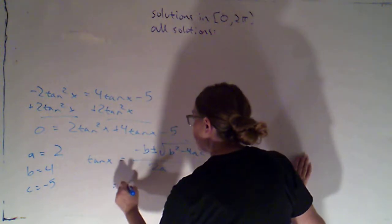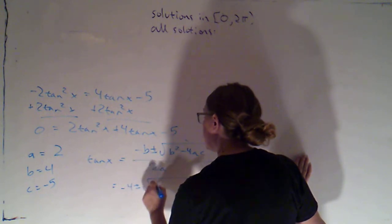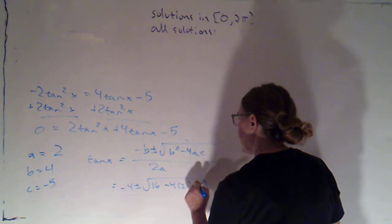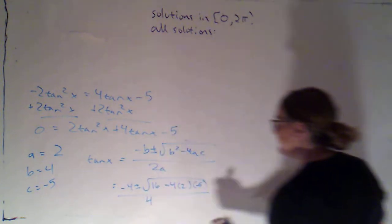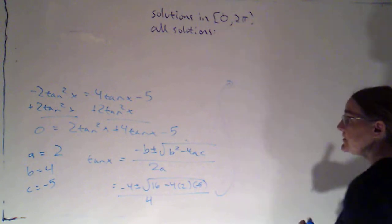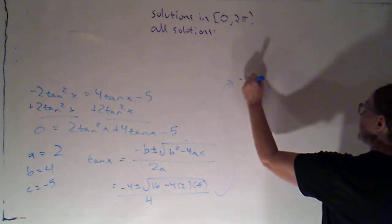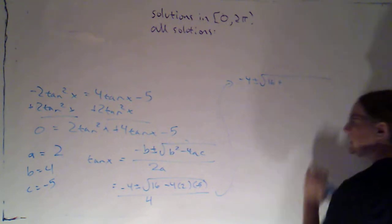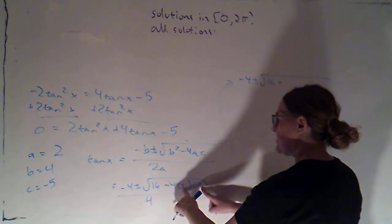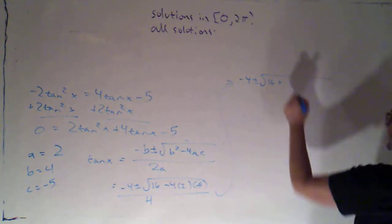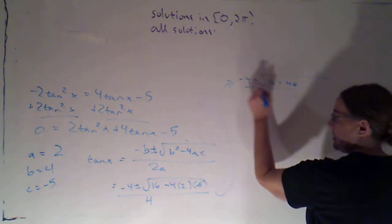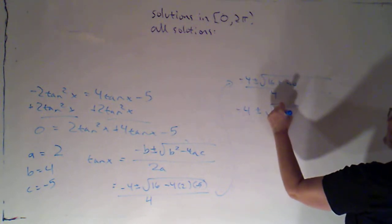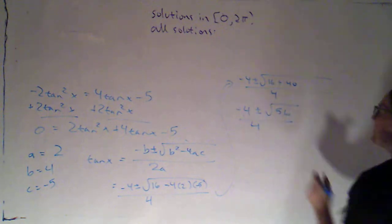Plugging in: that's −4 plus or minus the square root of 4² minus 4 times 2 times −5, all over 2a which is 4. So that's −4 plus or minus the square root of 16 — the minus times negative gives a plus — 4 × 2 × 5 = 40, so 16 + 40 = 56, all over 4. That gives −4 plus or minus √56, over 4.